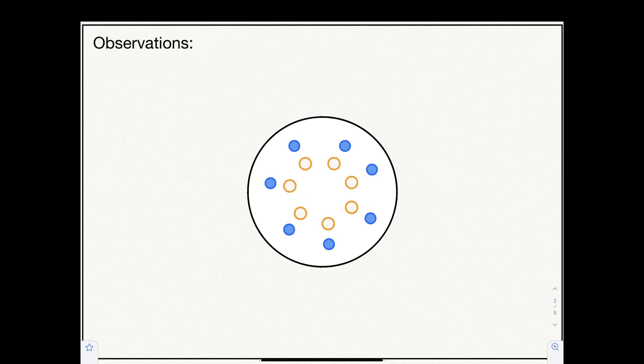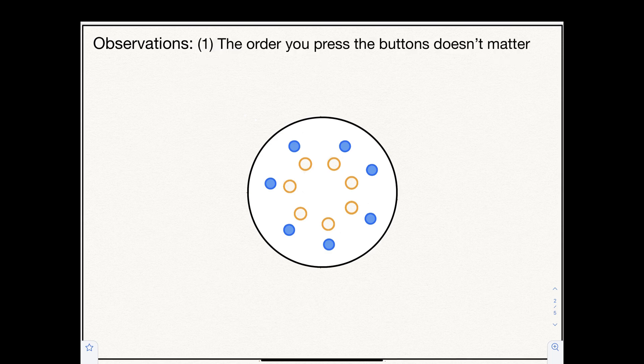The first observation is that the order you press the buttons doesn't matter. Let's focus on a single light bulb, which is controlled by its three closest buttons.